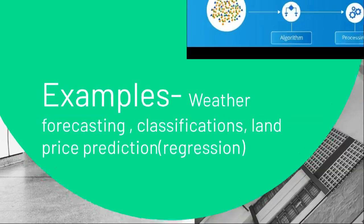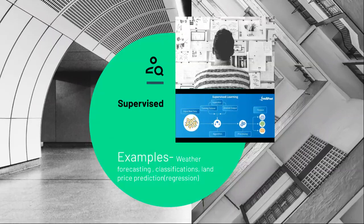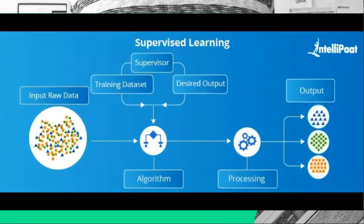Now let us see the details of supervised learning. In this diagram, we have different data, a supervisor is training the machine, an algorithm is given, and the algorithm finally divides data into different parts — this is a triangle, this is circular, this is rectangular. Based on input and output, the training dataset and desired output are used. The supervisor provides training depending upon the desired output set. This is supervised learning.